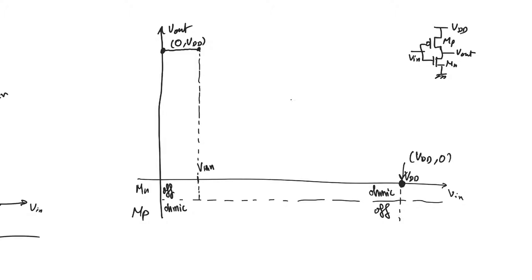Similarly, backing off from VDD, we know that the PMOS transistor starts out cutoff. The PMOS will turn on when its gate, V-input, falls below its source, VDD, by enough voltage that we have a V-threshold-P difference. Therefore, it will continue to be cutoff all the way down to VDD minus |V-threshold-P|. Be careful to use the absolute value of V-threshold-P, because V-threshold-P is a negative number. So the PMOS is cutoff down until VDD minus |V-threshold-P|.